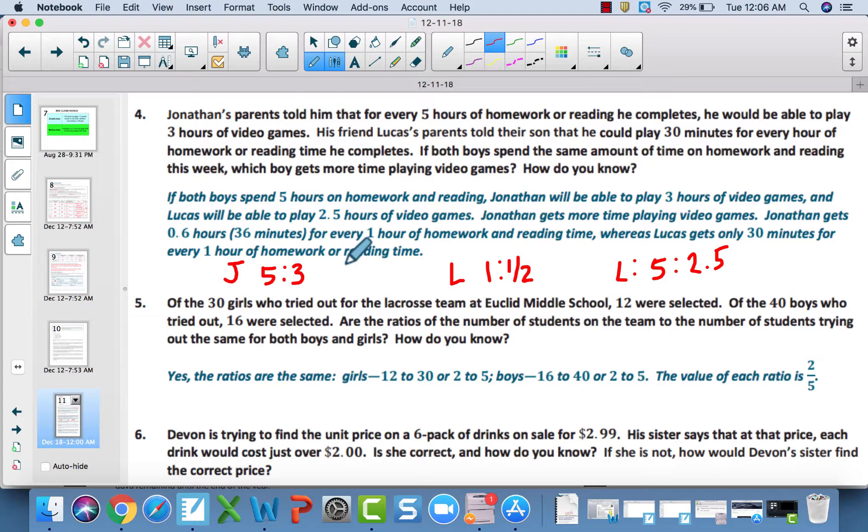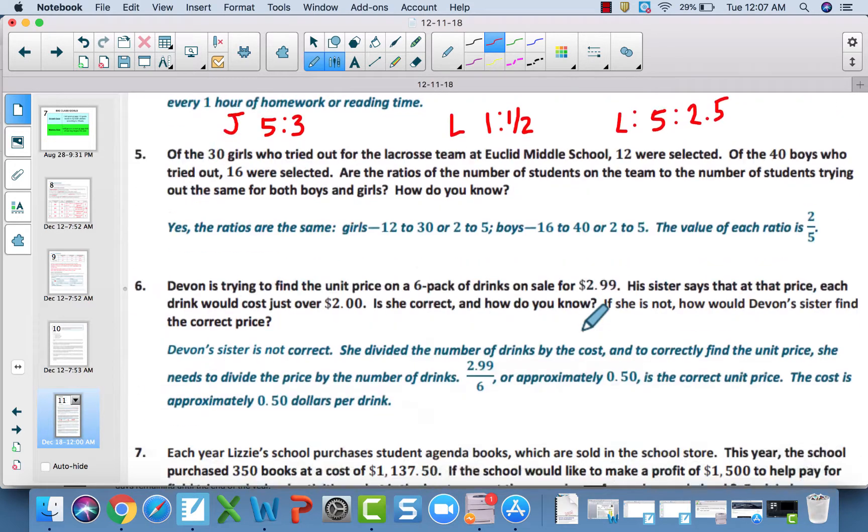Number five, the ratios are equivalent. You can find the unit rate, or the simplified ratio, which is two to five. Or, what you can do is you can multiply by the same scale factor. For number five, they are equivalent. They both simplify down to two to five, and they both have the same scale factor to get from one value to the next.